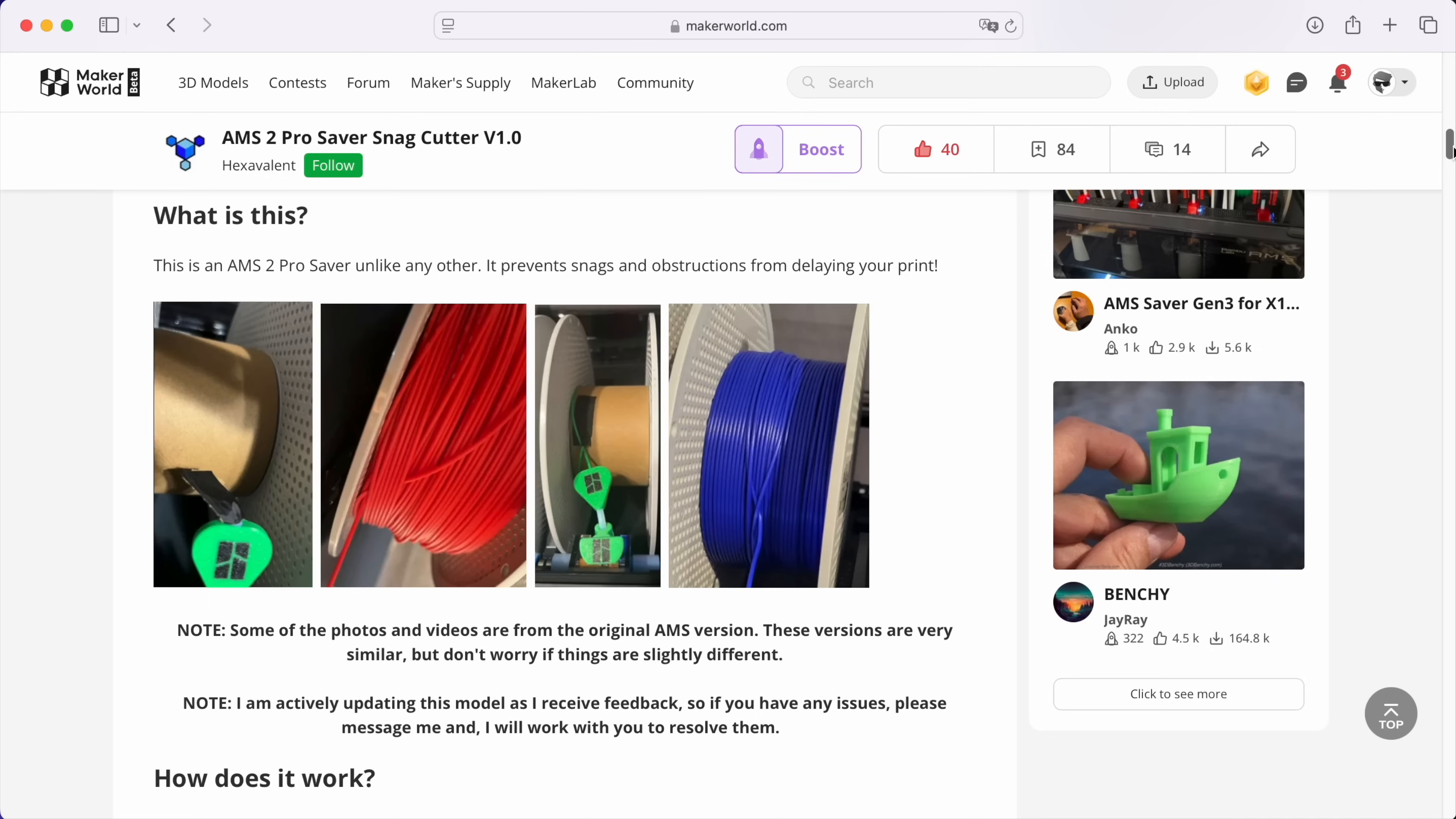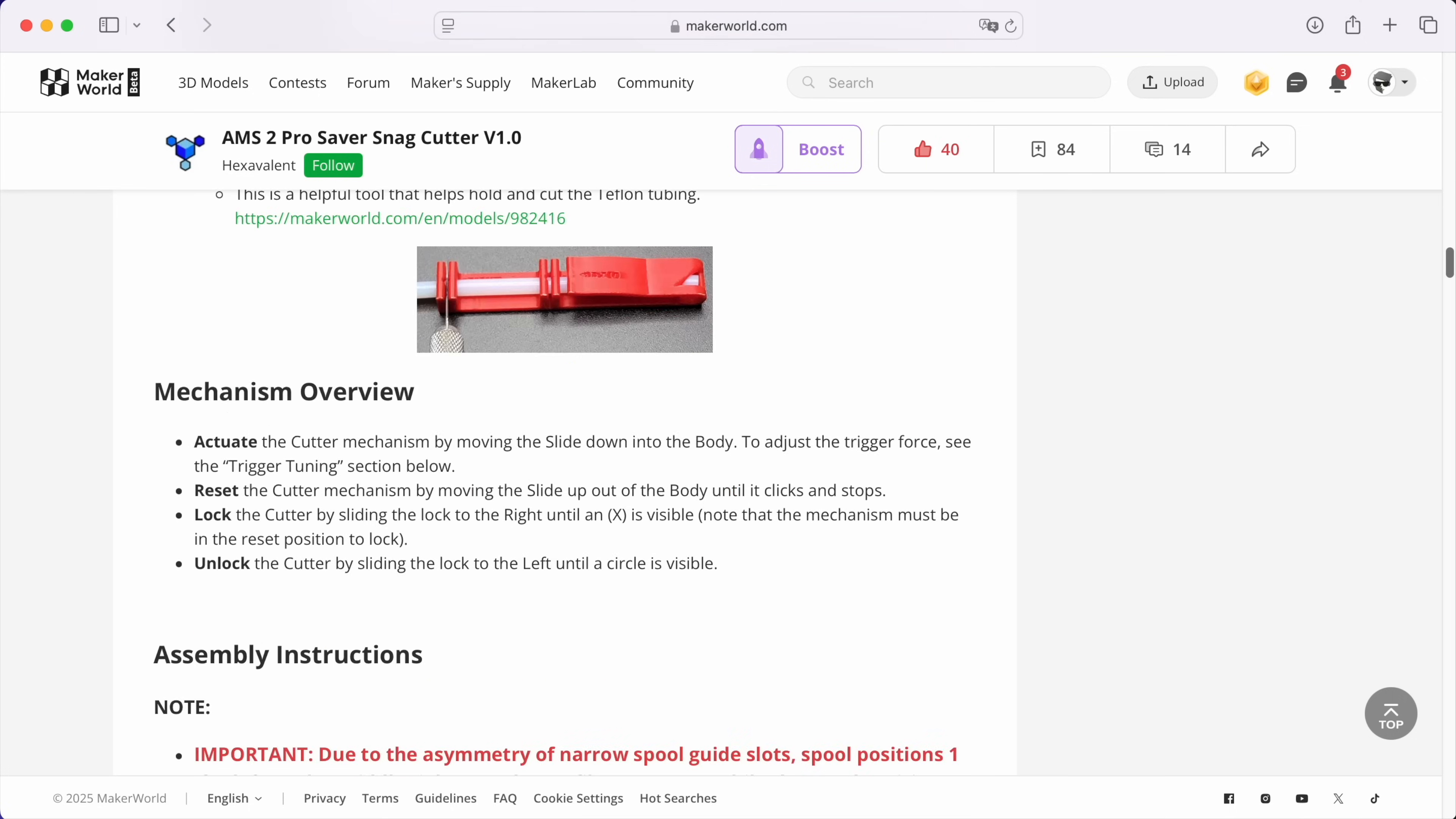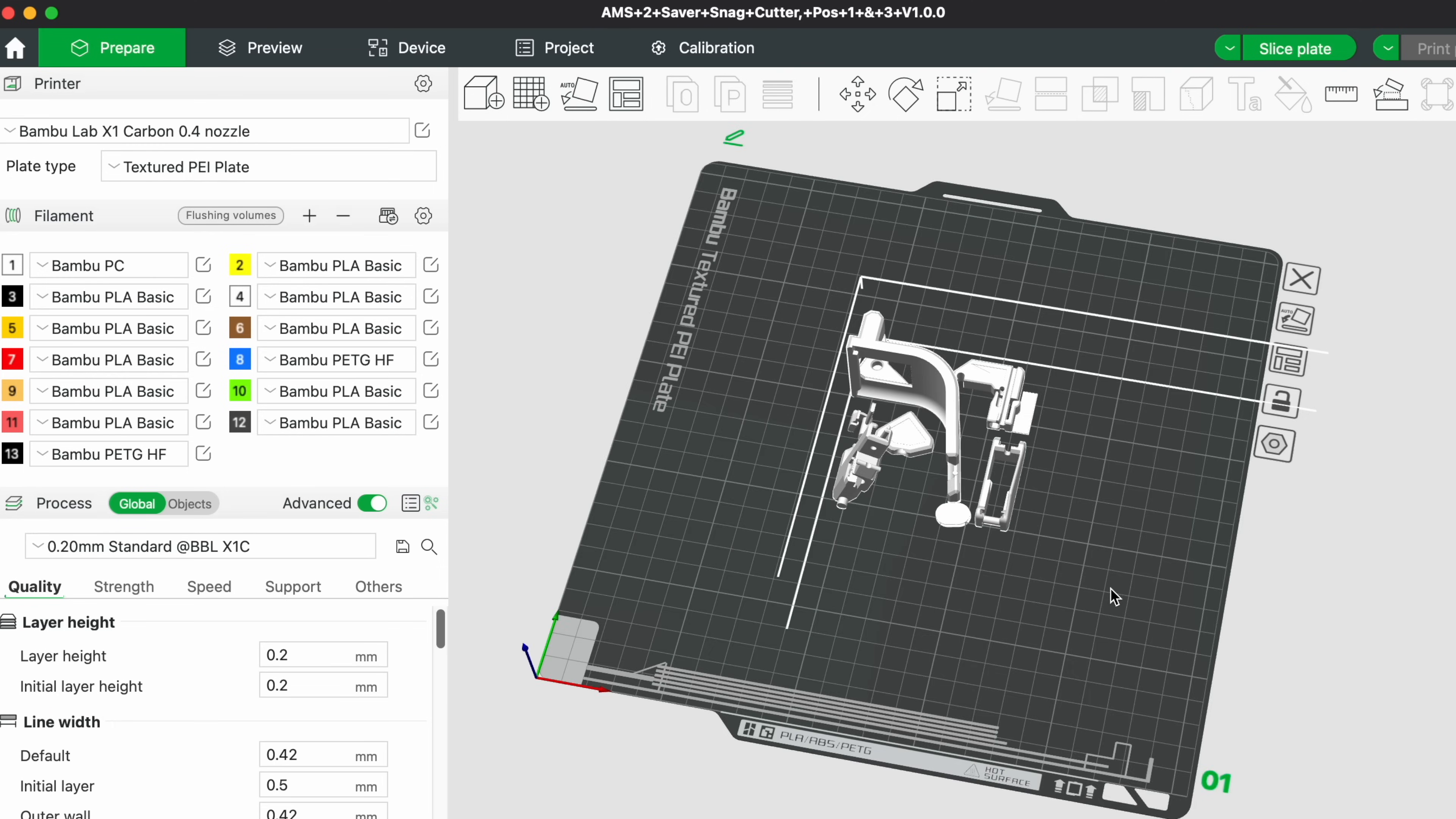If you want a more in-depth explanation on how the snack cutter works you are welcome to visit the designer's Maker World page. There's a lot of information there including how to tune the trigger force since the density of different filament types isn't always the same. I print mostly PLA so the default design works for me just fine.